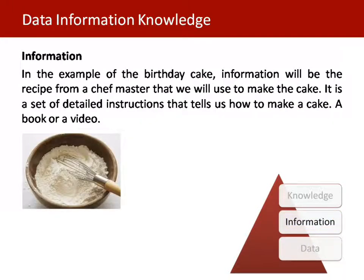In the example of the birthday cake, information will be the recipe from a master chef that will be used to make the cake. It is a set of detailed instructions that tell us how to make a cake from a book or a video. Based on that information, we are working and producing our birthday cake.